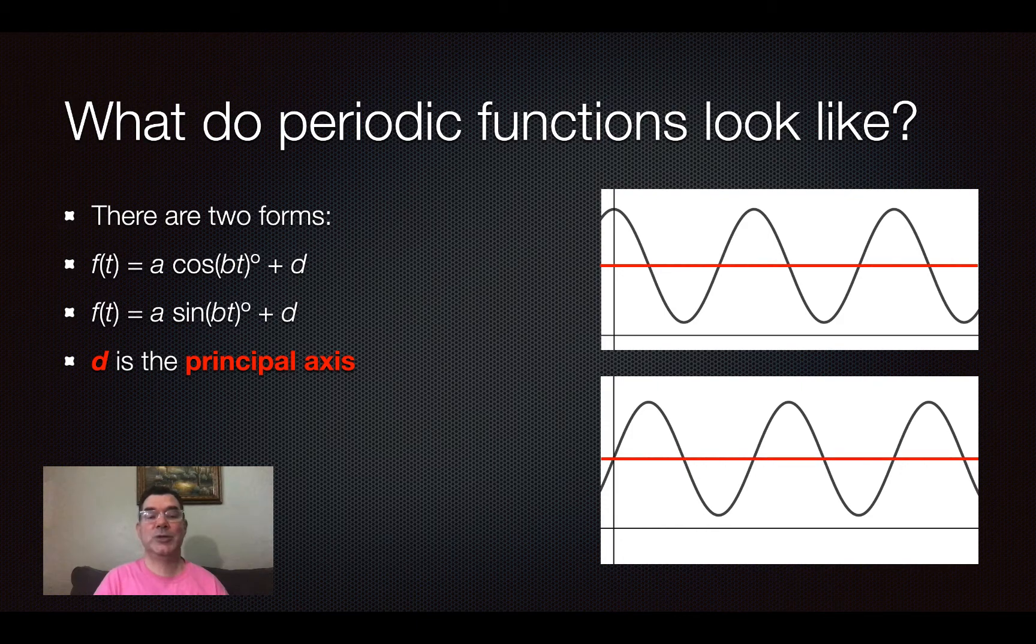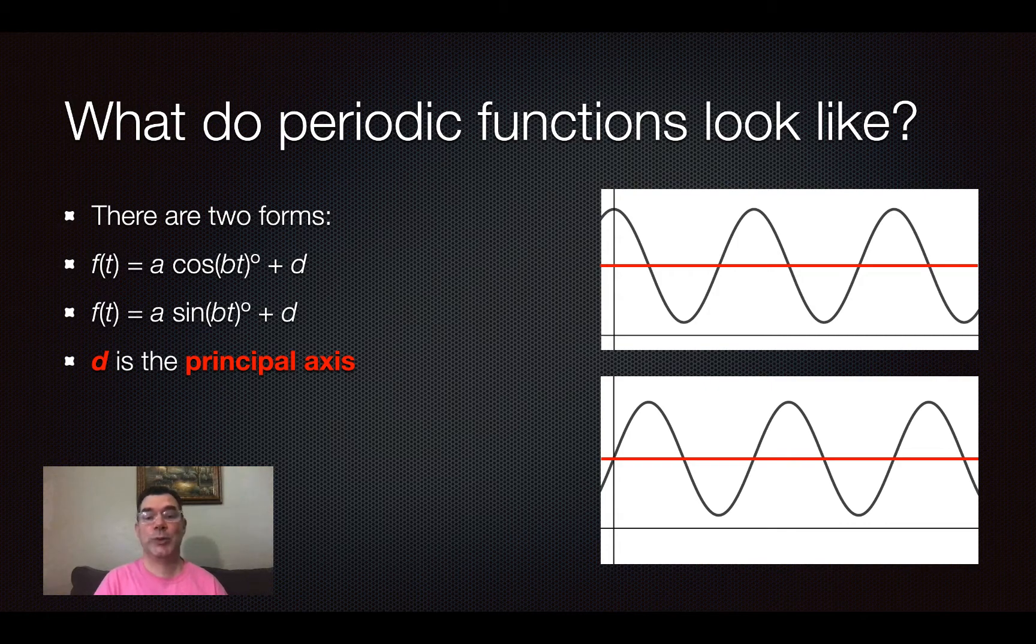So, the d that you see in both of those equations is represented by the principal axis. So we would need to find what that y-value is that cuts through each of those graphs right at the halfway point.